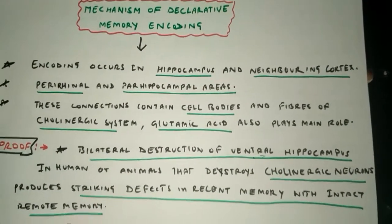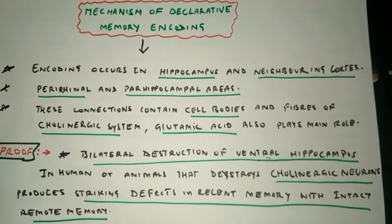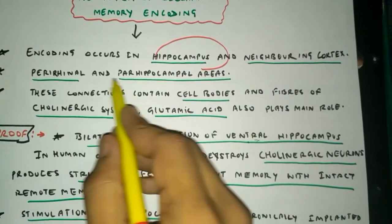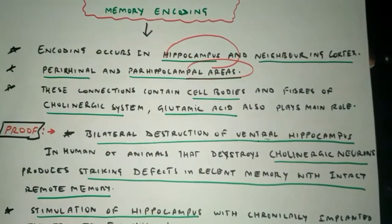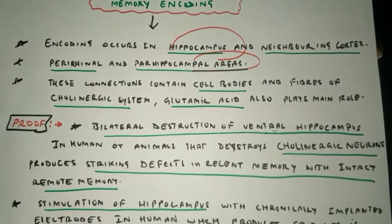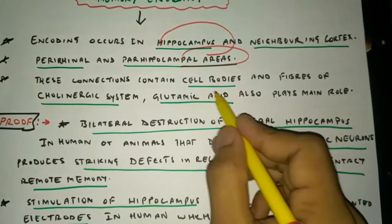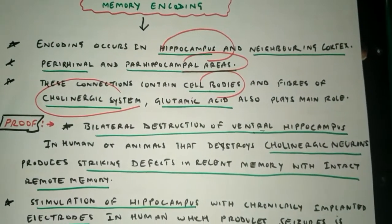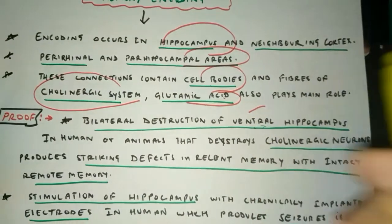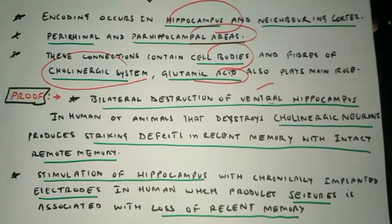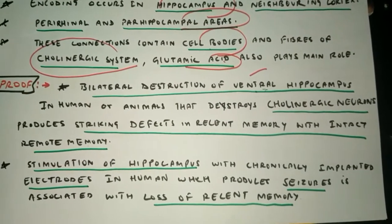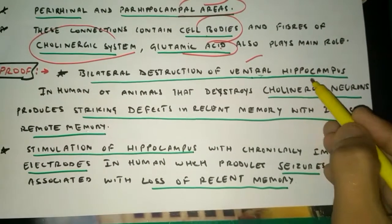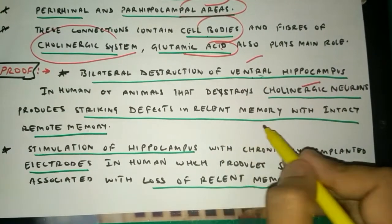Next is the mechanism of declarative memory encoding. Encoding occurs in the hippocampus and neighboring cortex — perirhinal and parahippocampal areas. These brain regions are related to memory encoding. The connections involve cholinergic cell fibers, and cholinergic receptors are very important for memory buildup. Glutamic acid receptors also play an important role. Proof: bilateral destruction of the ventral hippocampus destroys memory because cholinergic neurons are also destroyed and recent memory is abolished.